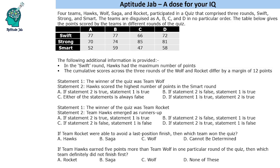We are given a couple of information. In the Swift round, Hawks had the maximum number of points. So the Swift round's top scores are 77 by A and B, meaning Hawks could be A or B. The second piece of information is that the cumulative scores across the three rounds of Wolf and Rocket differ by a margin of 12 points. Adding up the points: A is 147 plus 52 = 199, B is 151 plus 59 = 210, C is 151 plus 47 = 198, D is 153 plus 58 = 211.